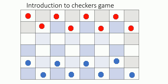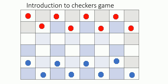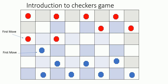The first step: the piece is moved diagonally. This is how the first move is made. The second move is made by the red pawn, and then the blue pawn captures the red pawn by jumping over it and placing itself on the other side.